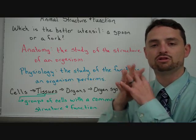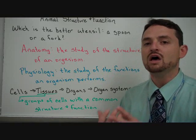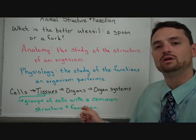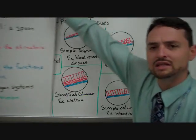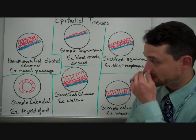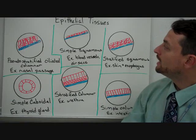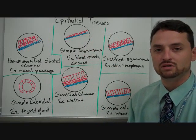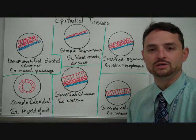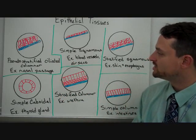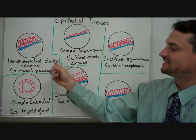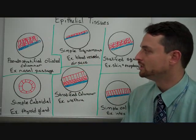Cells come together with commonality among them, and in working together they perform a similar function. We primarily look at four tissues, and that's what we're going to focus on today. The first type is epithelial tissues. In epithelial tissues, we've got six examples, and we're going to be working on some of these in class with some projects as well. The first type is called a pseudostratified ciliated columnar tissue.